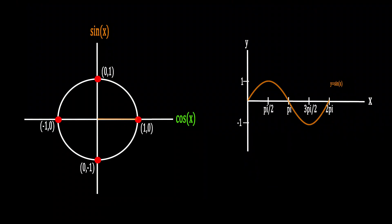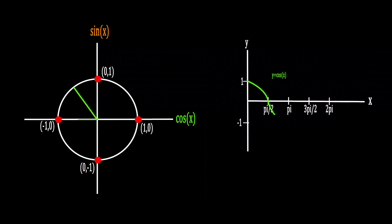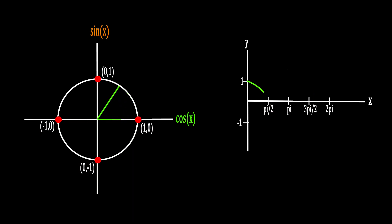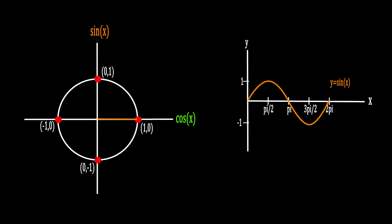We can consider the same concept for cos of theta — paying attention to the x-axis value as the radius rotates around the unit circle. With no rotation the value is one, then as we rotate 90 degrees it drops to zero. From 90 to 270 degrees the value of cos is negative. In the final stretch it becomes positive and wraps back up to one. This shows that sine and cos are defined with great symmetry.